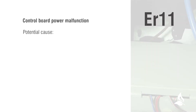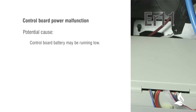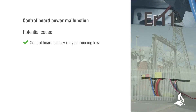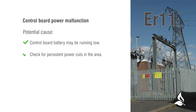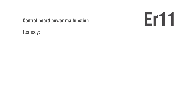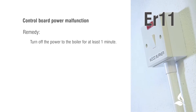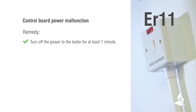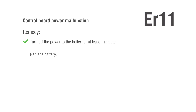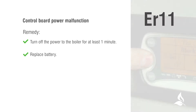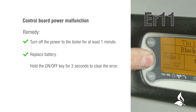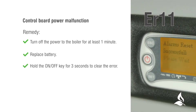ER11: Control board power malfunction. Potential causes: control board battery may be running low; check for persistent power cuts in the area. Remedy: turn off the power to the boiler for at least one minute, replace the battery. Hold the on-off key for 3 seconds to clear the error.